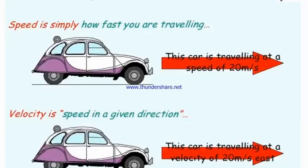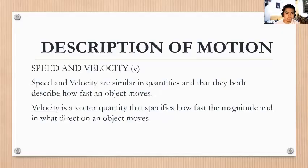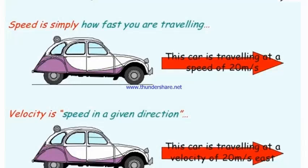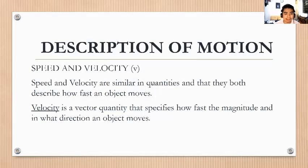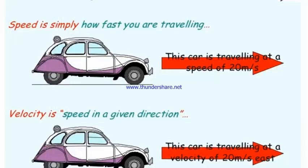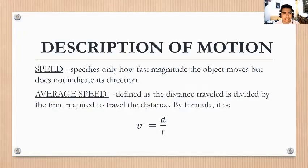Speed and velocity are similar in that they both describe how fast an object moves. Velocity is a vector quantity that specifies both how fast (magnitude) and in what direction an object moves. Speed specifies only how fast (magnitude) and does not indicate direction. Speed is scalar and velocity is a vector quantity.